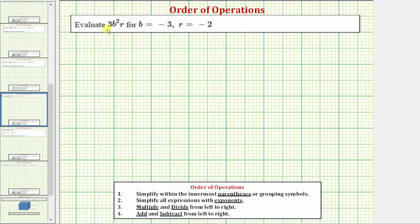We want to evaluate the expression 3b²r, which means three times b squared times r, for b equals negative three and r equals negative two.